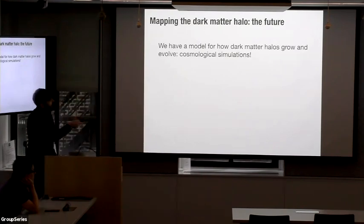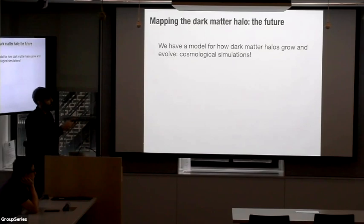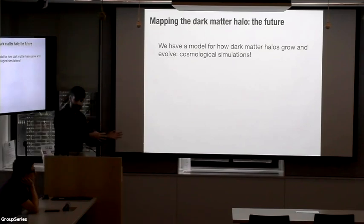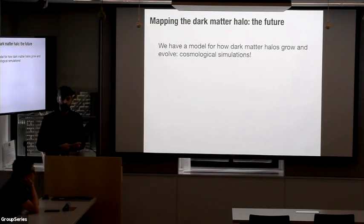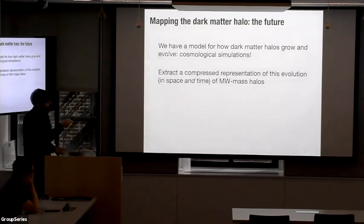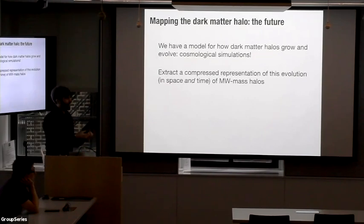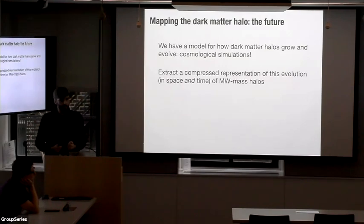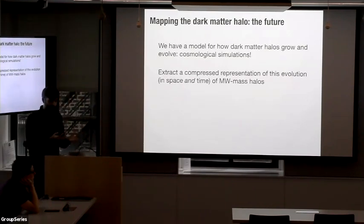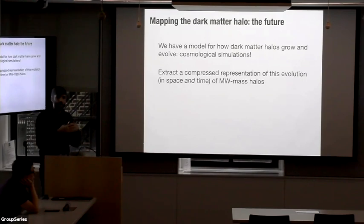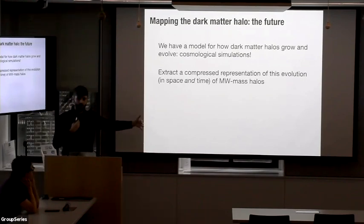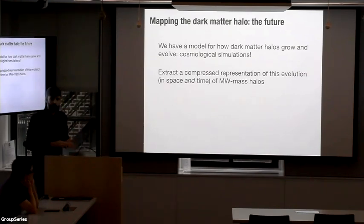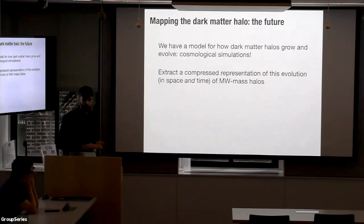I've been thinking about one possible path that makes a really nice connection between the galaxy formation group here, the dynamics group, and the data group. We have pretty good models now for how dark matter halos grow and evolve — we have cosmological simulations, and a lot of them — and those predict the typical growth histories and time dependence we expect to see in Milky Way-like dark matter halos. So we should be able to use these simulations to extract a compressed representation of this kind of evolution, both spatially and in time. I'm imagining something like a basis function expansion for the density field, but now also including time as another dimension — that's Martin Weinberg's group, for example, has made some initial promising progress on this.